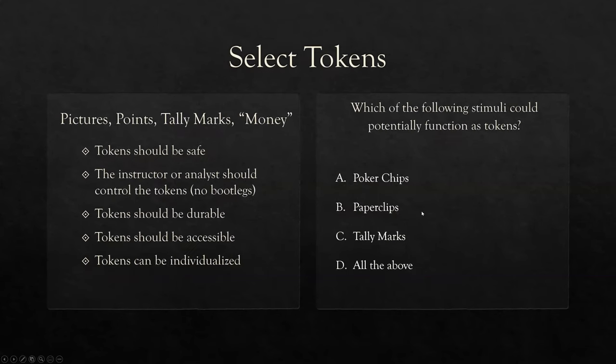Then we select our tokens. In ABA, we typically think of printed laminated picture cards, which are great and totally acceptable. But you can use essentially anything for tokens as long as we're pairing them correctly — pictures, points, tally marks, or fake money, which is great for teaching kids the value of money. There are some guidelines: tokens should be safe. Always ensure the safety of our clients. Don't use something sharp like a thumbtack or something easily ingested. Just use common sense.